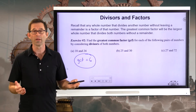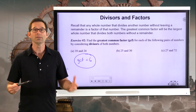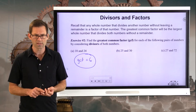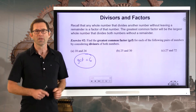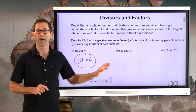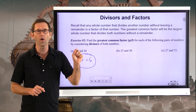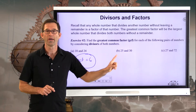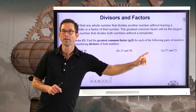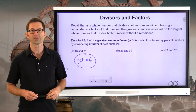The greatest common factor of 18 and 24 is 6. Often, to determine a GCF, the easiest way is to just look at the two numbers and find the biggest common divisor. I'd like you to try that with letter B — 25 and 30 — and letter C — 27 and 72. Pause the video now and take a shot at this.